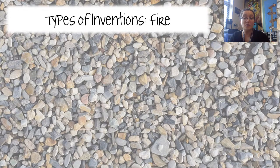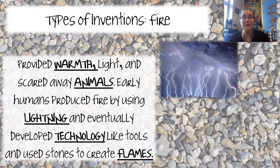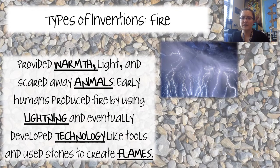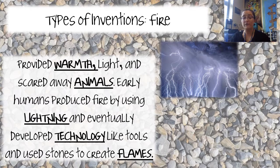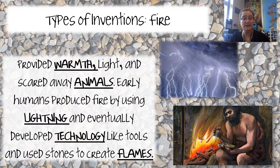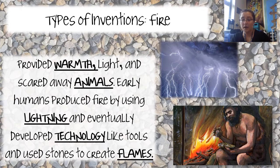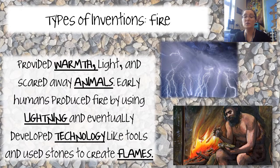We also invented things to keep us warm and keep wild animals away. Fire produced warmth, light, and scared away animals, keeping us safe. We first observed that lightning strikes caught things on fire and made animals run away. Eventually we developed technology like flints to create our own fire — hitting two rocks together to get sparks. Cooking food also makes it easier to digest, so we got more nutrients, which helped our brains get bigger and kept us healthier.